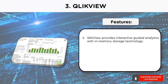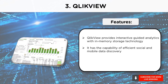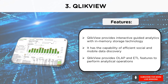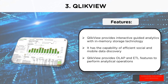QlikView uses a new patented in-memory architecture for data storage. All the data from the different sources is loaded in the RAM of the system and is ready to be retrieved from there. It has the capability of efficient social and mobile data discovery. Social data discovery offers to share individual data insights within groups or outside of it. A user can add annotations as an addition to someone else's insights on a particular data report. QlikView supports mobile data discovery within an HTML5-enabled touch feature which lets the user search the data and conduct data discovery interactively and explore other server-based applications. QlikView performs OLAP and ETL features to perform analytical operations, extract data from multiple sources, transform it for usage and load it to a data warehouse.